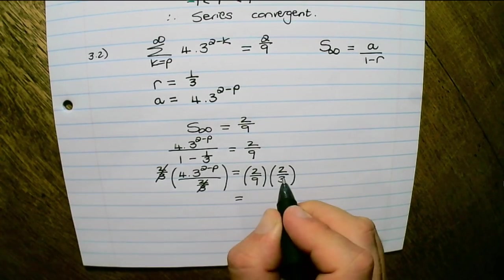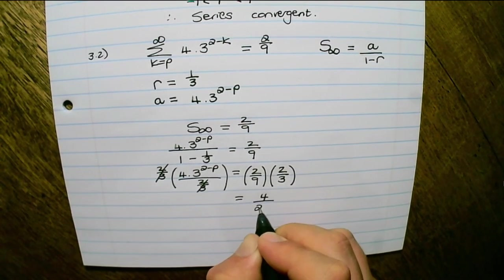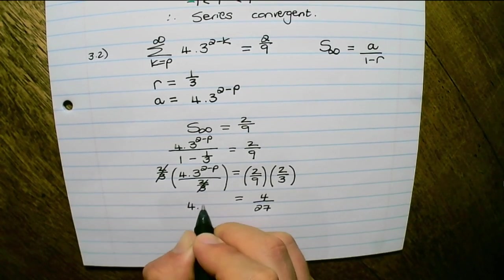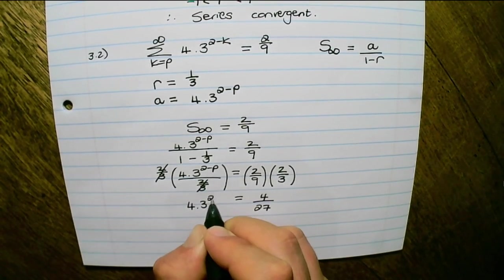And if I simplify, this would be 4 over 27, which equals 4 times 3 to the power of 2 minus p.